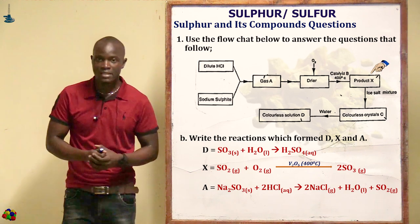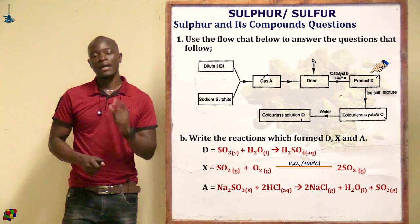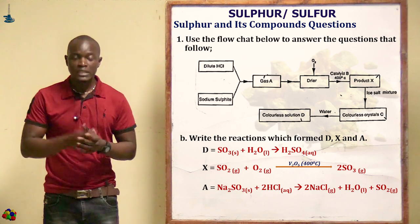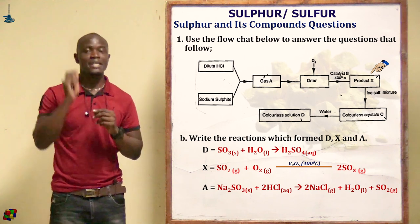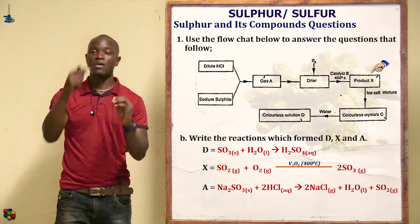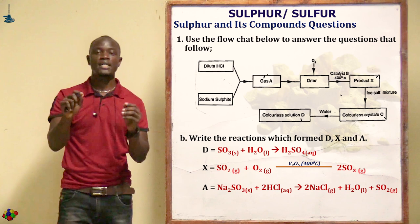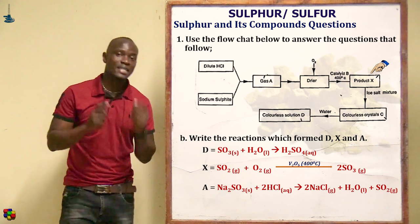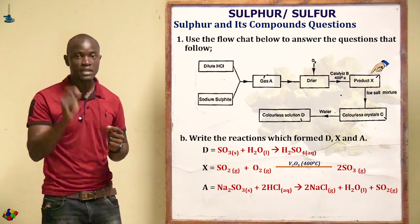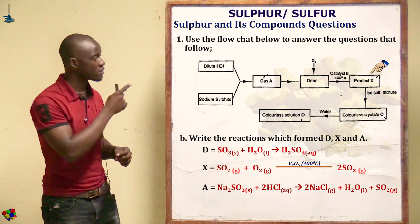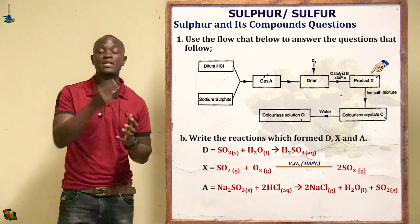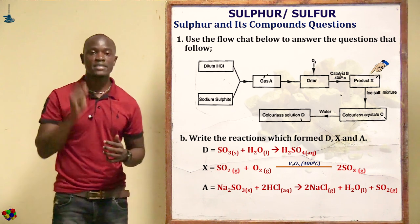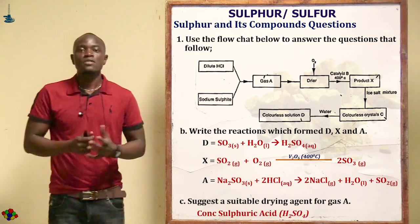For product X: gas A (sulfur dioxide, SO₂) enters the dryer along with oxygen. They pass through the catalyst, forming product X. Product X is therefore sulfur trioxide (SO₃). The equation is SO₂ + O₂ → SO₃ in gaseous form, in the presence of a catalyst.